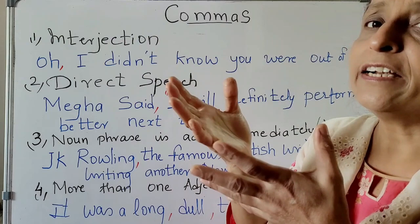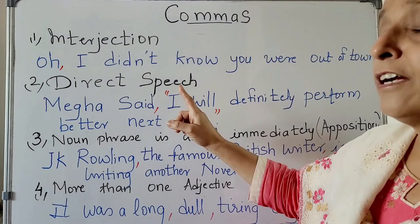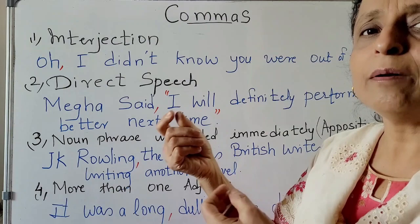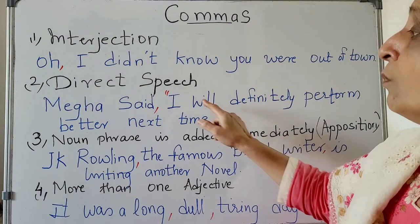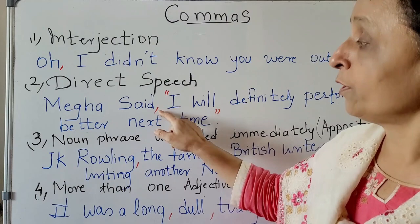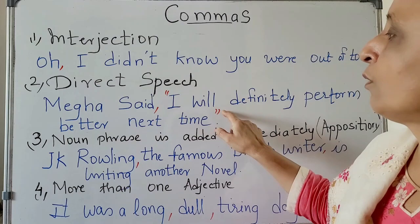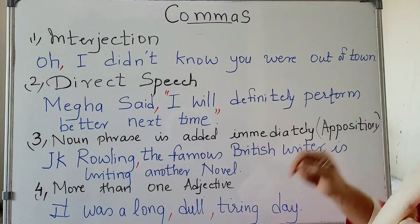So after that interjection — 'oh,' 'well' — you put a comma. Now for direct speech: you put the name, then a comma, and what is said you put in inverted commas. Inverted commas are two commas placed up — the sentence should be in inverted commas. For example: Mega said, "I will definitely perform better next time."